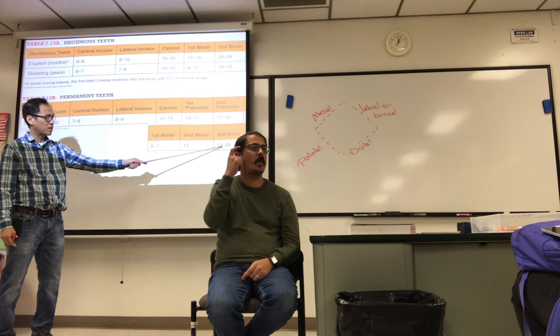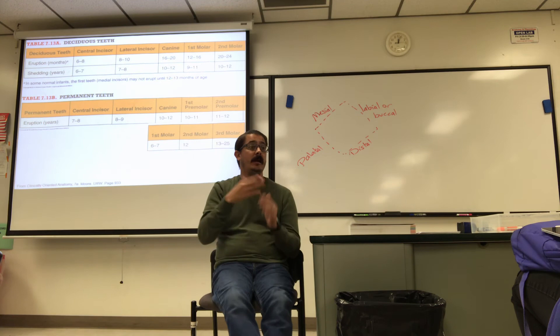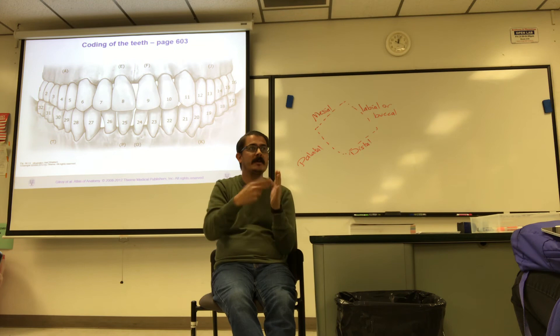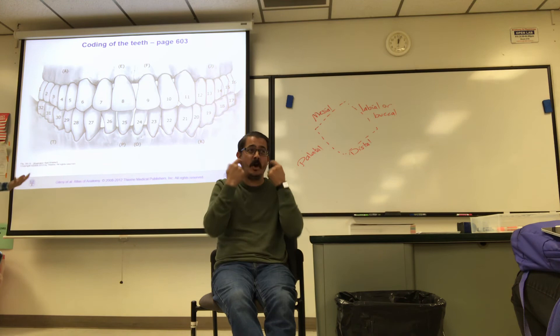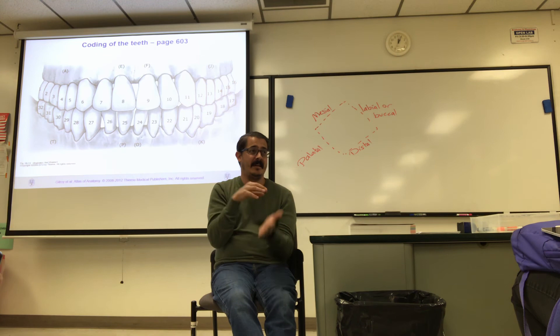The eruption of wisdom teeth is variable. For example, the instructor has had all four wisdom teeth removed, so teeth numbered 1, 16, 17, and 32 are missing — giving 28 remaining teeth. When you extract a tooth, you don't re-number; you just skip it. Baby teeth use letters, but adult teeth use numbers 1-32.